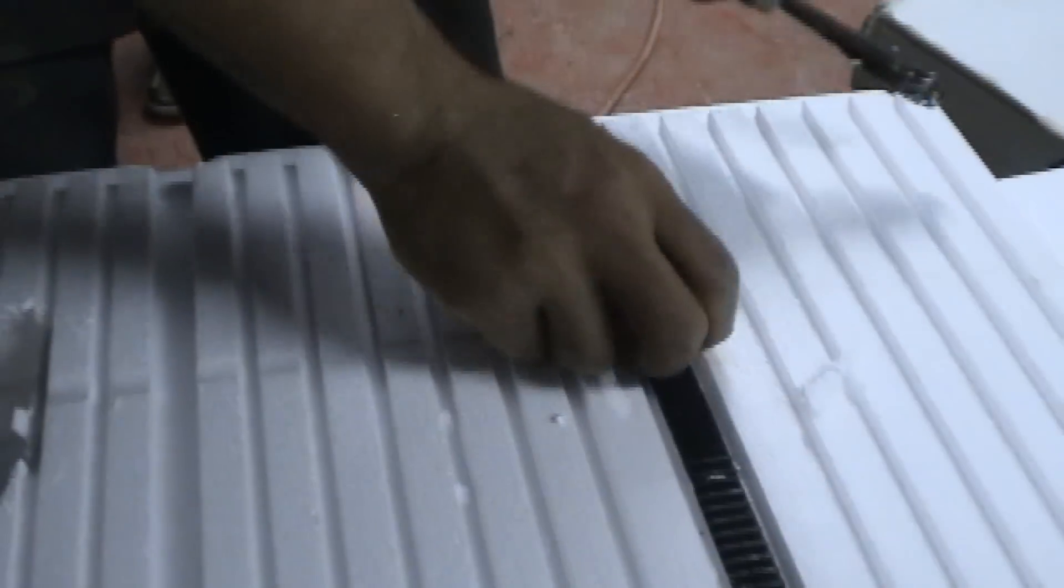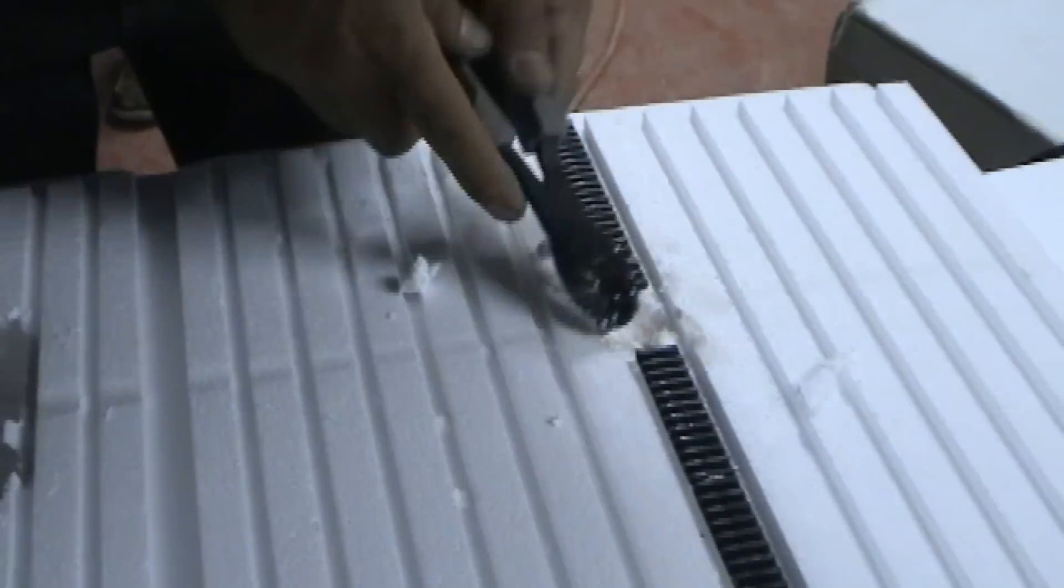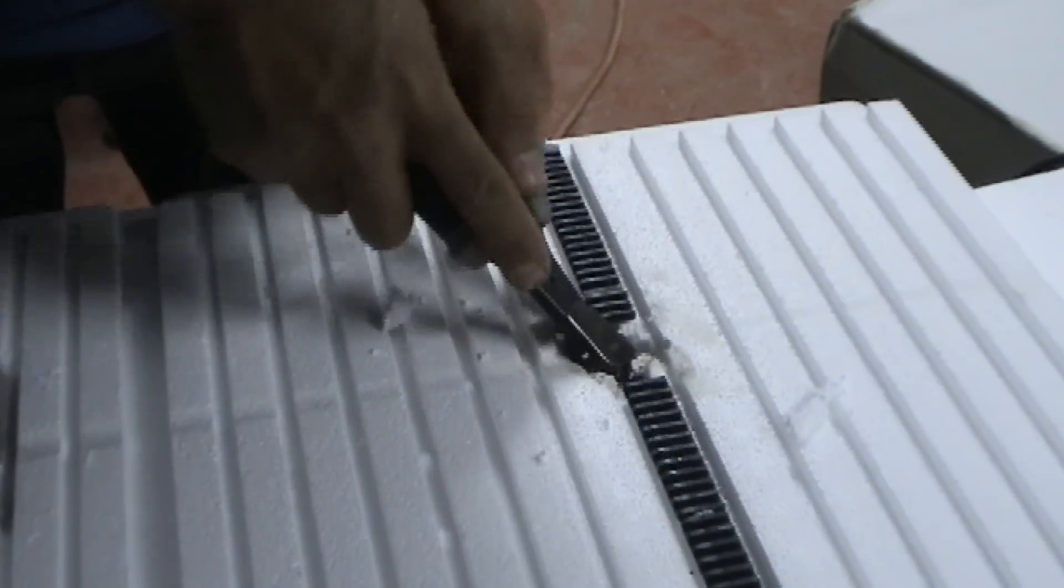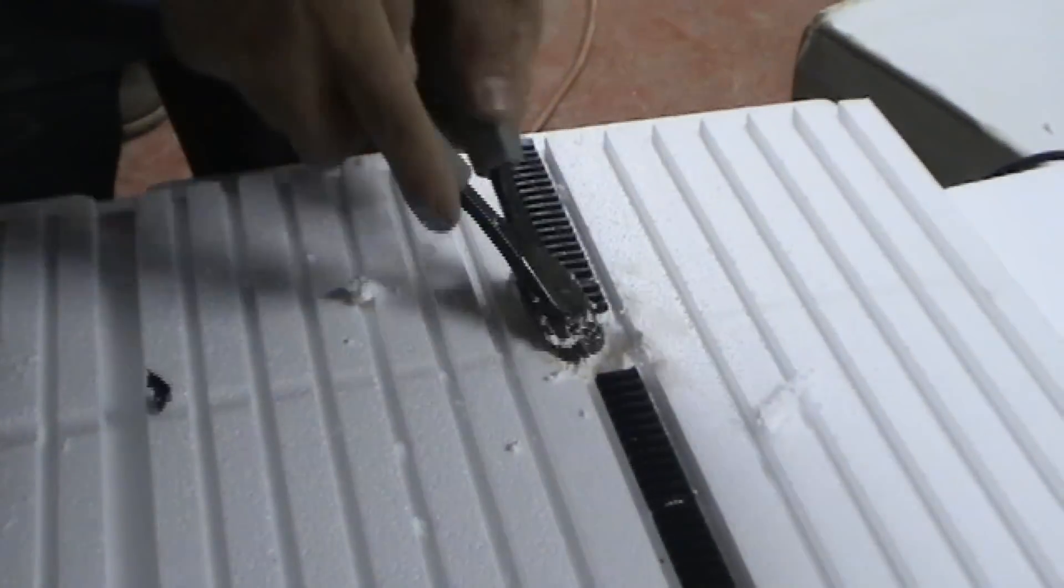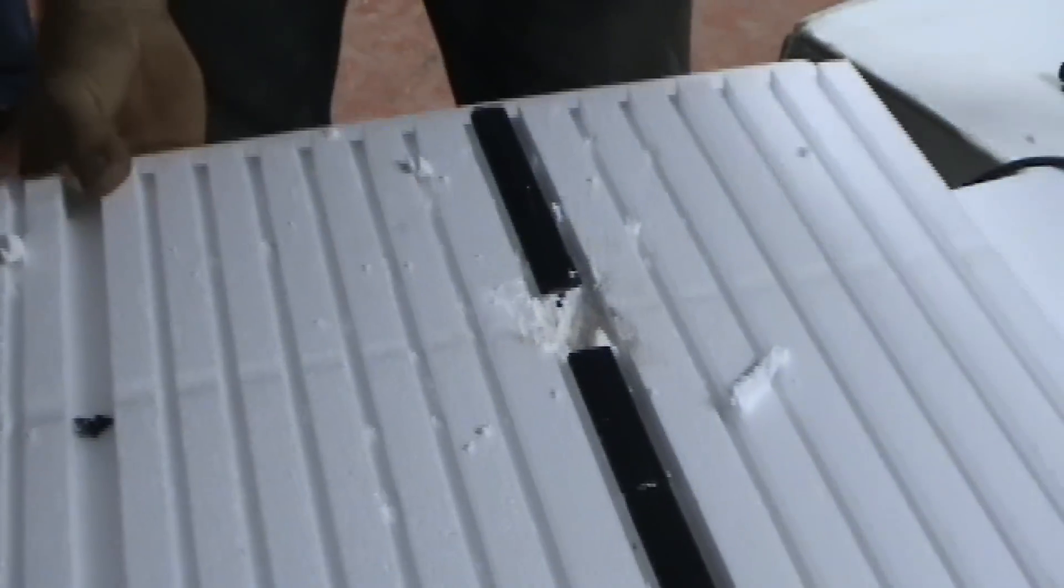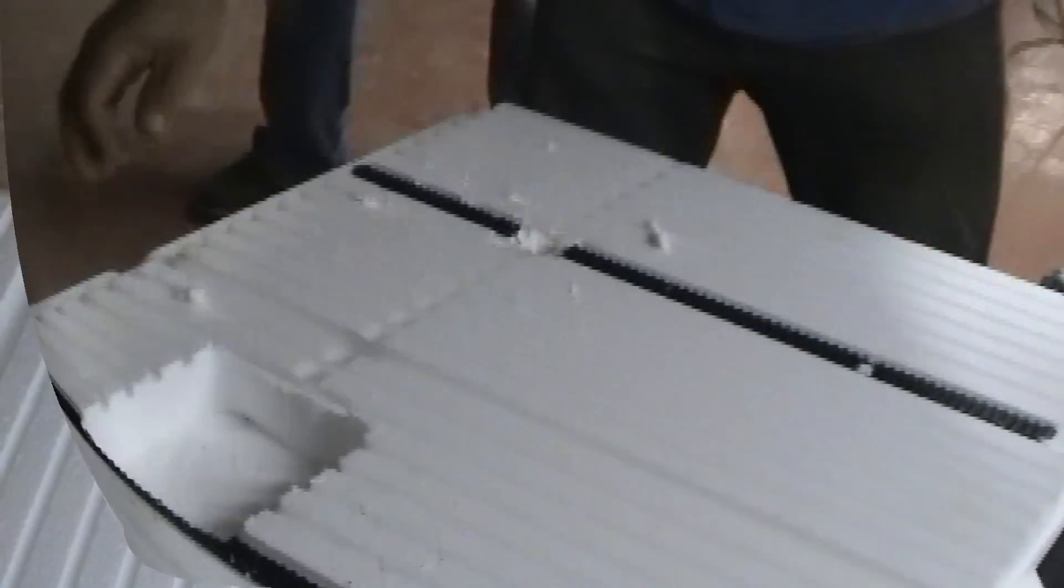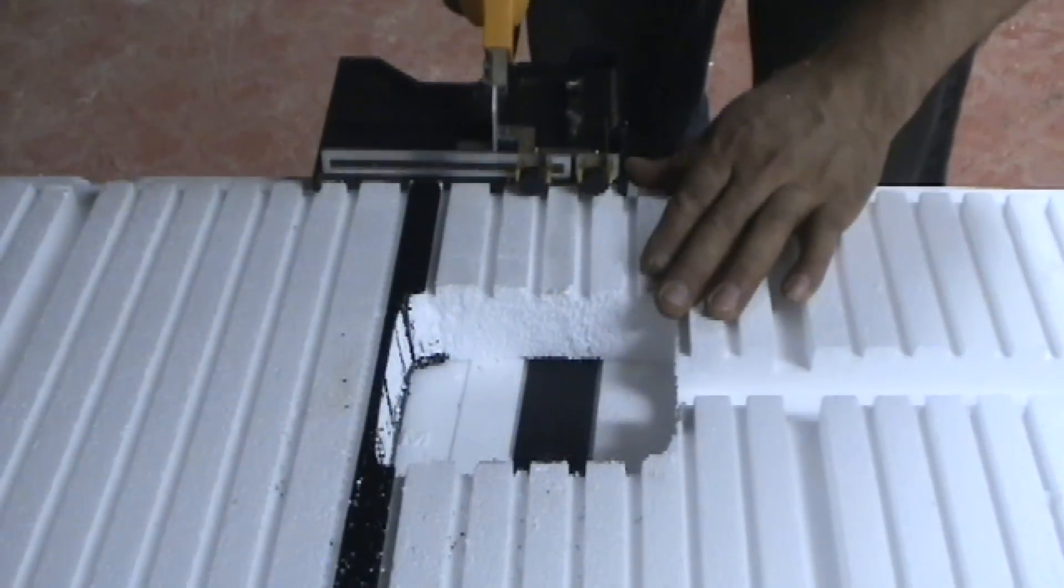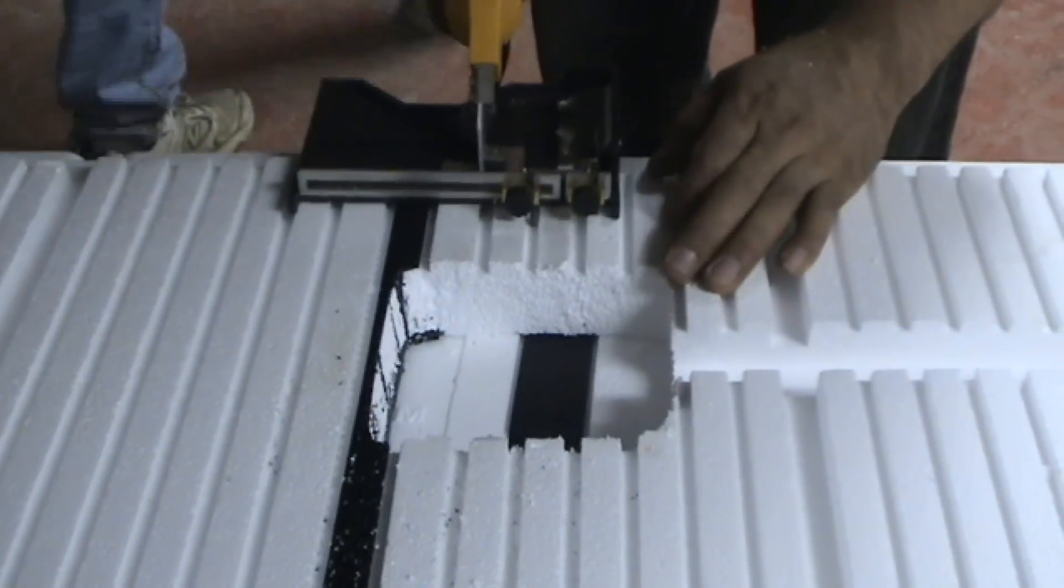Again, this is the Permaseal guy cutting out the stud, nipping the T piece, getting it nice and deep. And again doing the vertical and the horizontal chaseways.